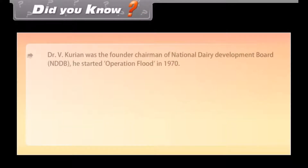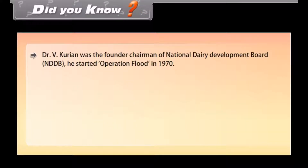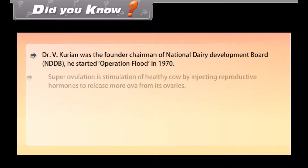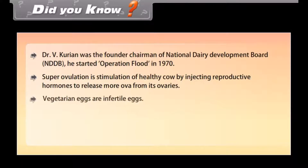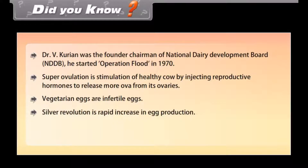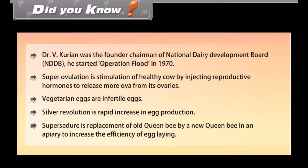Did you know? Dr. V. Kurian was the founder chairman of the National Dairy Development Board (NDDB) and started Operation Flood in 1970. Superovulation is the stimulation of a healthy cow by injecting reproductive hormones to release more ova from its ovaries. Vegetarian eggs are infertile eggs. Silver revolution refers to the rapid increase in egg production. Super seizure is the replacement of an old queen bee by a new queen bee in an apiary to increase the efficiency of egg laying.